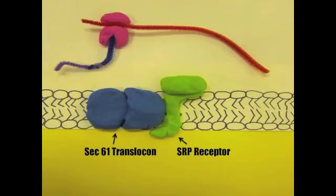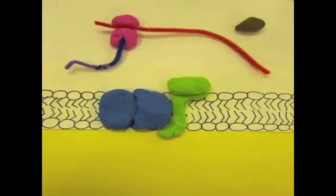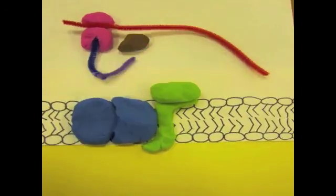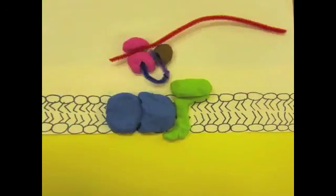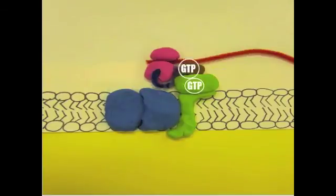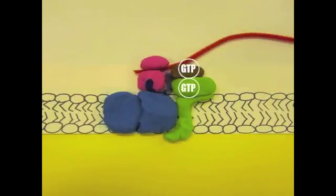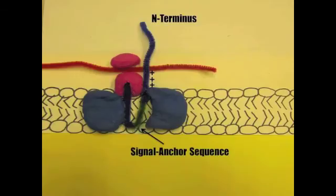Type 2 and type 3 proteins lack a cleavable N-terminal ER signal sequence. Instead, both possess a single internal hydrophobic signal anchor sequence that functions as both an ER signal sequence and a membrane anchor sequence. In type 2, after the internal signal anchor sequence is synthesized on the ribosome, it is bound to an SRP, which directs the ribosome and polypeptide chain complex to the ER membrane. The polypeptide chain becomes oriented in the translocon with its N-terminal portion toward the cytosol.